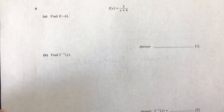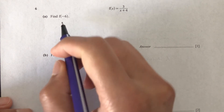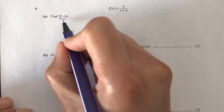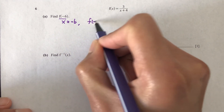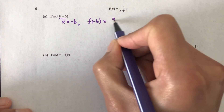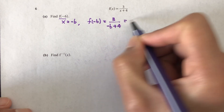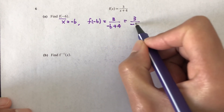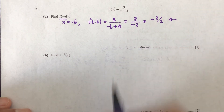Question number 6: f(x) equals 3 over (x plus 4). Part A: find f(−6). We replace x with minus 6: f(−6) equals 3 over (−6 plus 4), which is 3 over minus 2, giving minus 3 over 2. That's your answer.